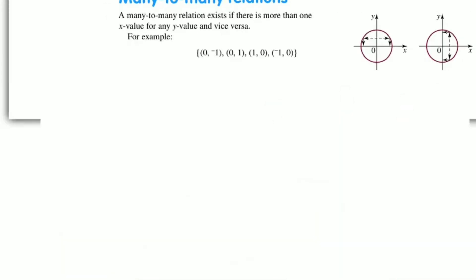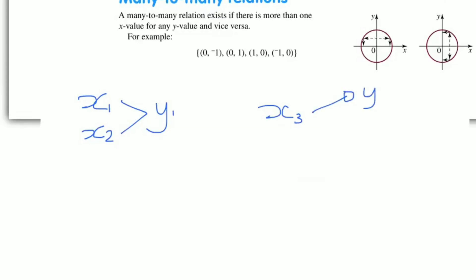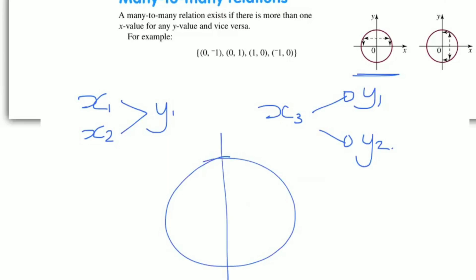A many-to-many relationship occurs where many x values can generate a single y value, but also where a single x value can generate multiple y values. The most common form of these is circles. For a circle, a single x value has two corresponding y values, and a single y value corresponds to two x values.